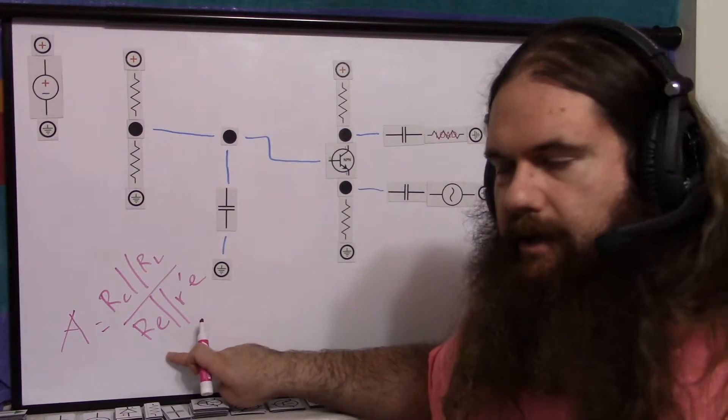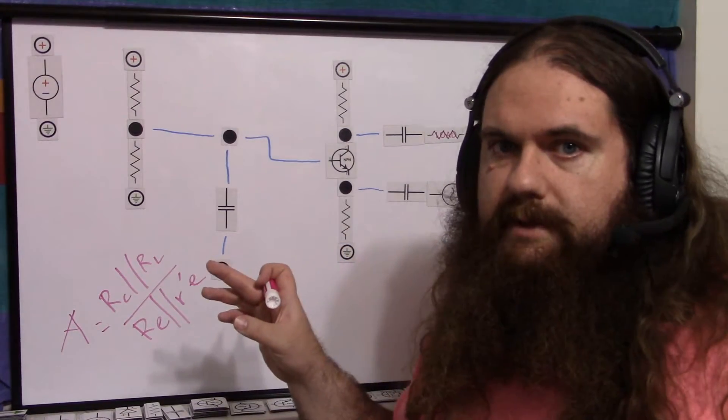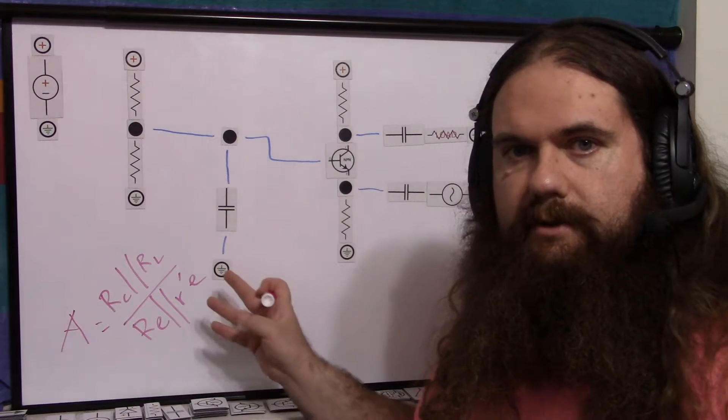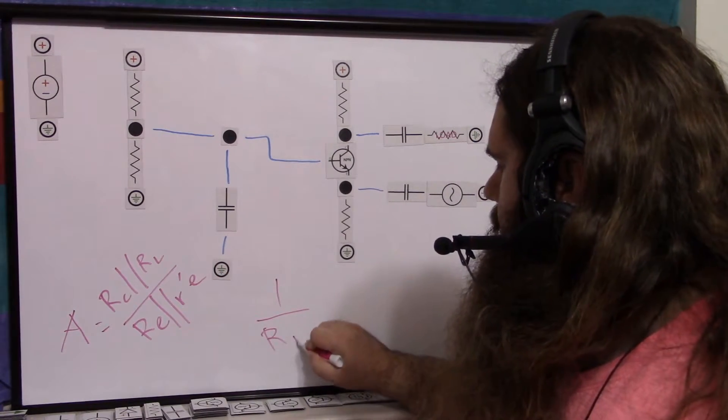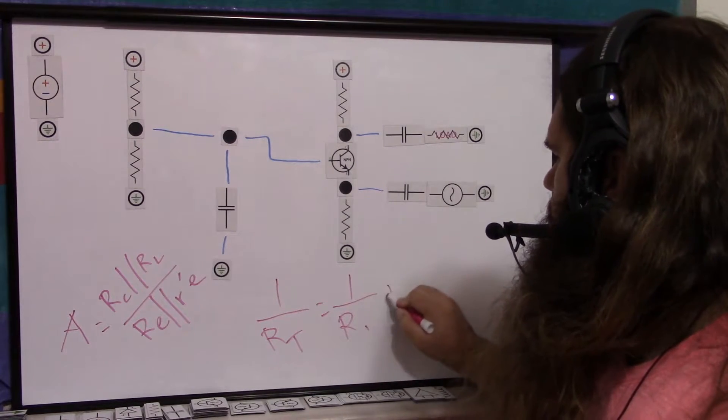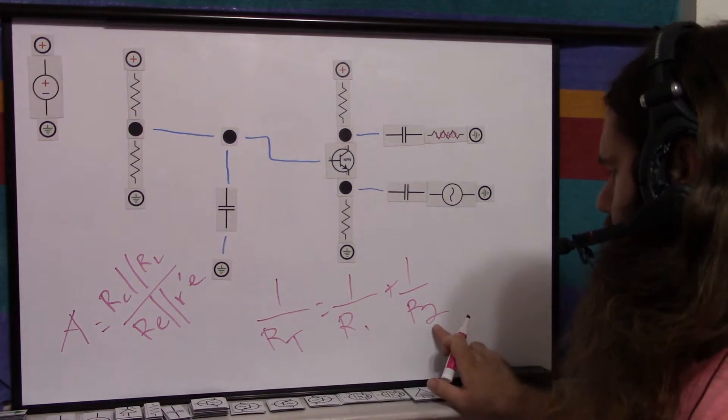The other thing is, this r apostrophe e is incredibly small compared to emitter resistor. Like 25 ohms here, and even 100 ohms, which is small. Emitter resistor of 100 ohms is pretty small. But even that small, it's only a quarter. And parallel resistance, 1 over R total equals 1 over R1 plus 1 over R2.